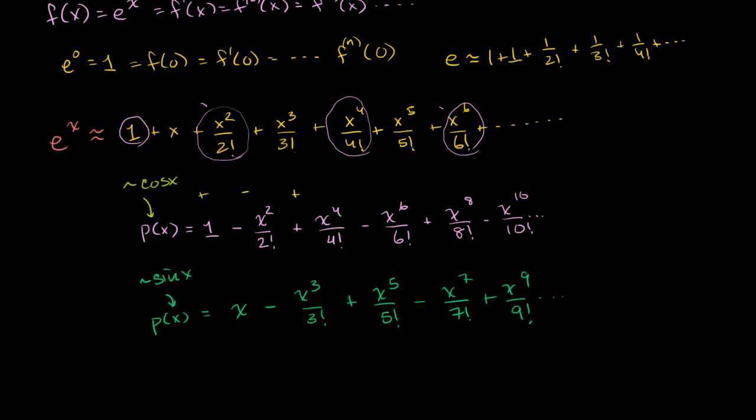And sine of x looks just like this term, plus a negative version of this term plus this term plus a negative version of the next term. So if we can somehow reconcile the negatives in some interesting way, it looks like e to the x is somehow, or at least its polynomial representation of e to the x, is somehow related to a combination of the polynomial representations of cosine of x and sine of x.